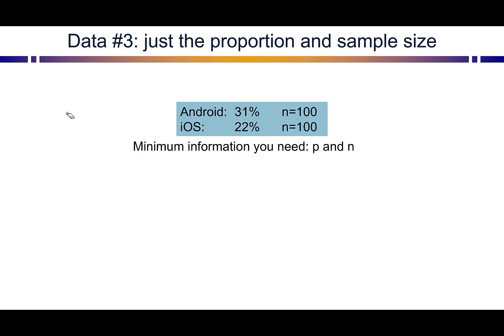A third way the data could show up is just the proportion and your sample size. So 31% versus 22%, and we know N is equal to 100. Each of these three sides is identical in terms of the information. It's just presented in different ways. And in each case, you can run a test of proportions.